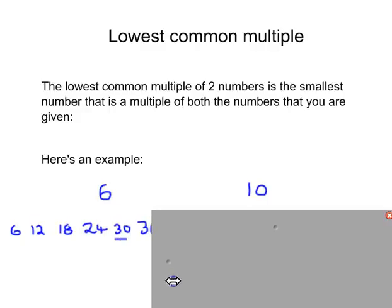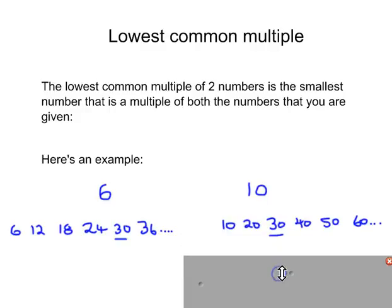I've started here writing out the 6 times table, and here I'm writing out the 10 times table. Look through both lists, and the first number that is in both lists is your answer. So 30 is in the 6 times table and it's also in the 10 times table, so there's your answer.